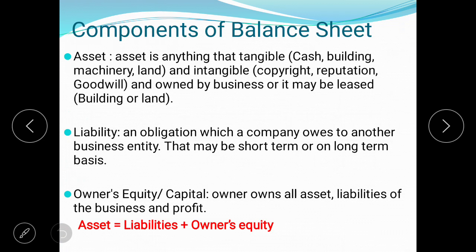The components of the balance sheet are assets, liabilities, and owner's equity. An asset is anything owned by the company that may be tangible or intangible. Tangible assets include cash, building, machinery, land, car, and plants. Intangible assets include copyright, reputation, and goodwill. Liability is an obligation that the company has to pay, which may be short term or long term. Owner's equity comes from the accounting equation: assets equal liabilities plus owner's equity.